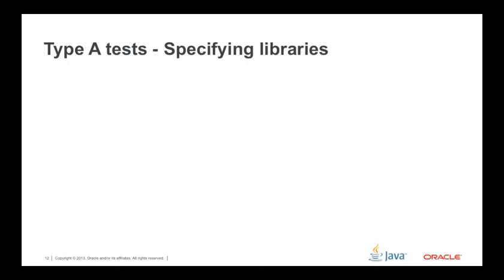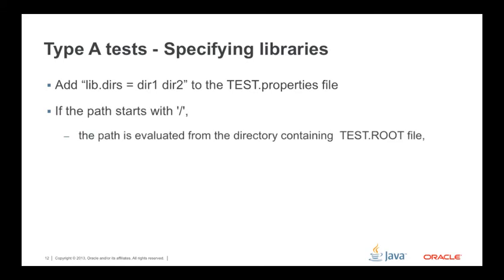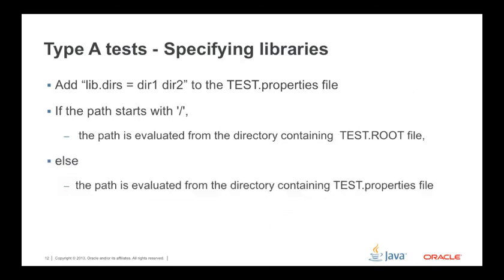To specify libraries in Type A tests, add 'lib.DIRS' equal to the directory containing the libraries to the Test.Properties file. If the path starts with a slash, the path is evaluated from the directory containing the Test.root file. Otherwise, the path is evaluated from the directory containing the Test.Properties file.